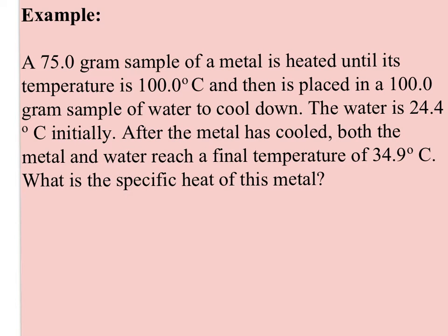What I'd suggest you do when working these problems is write down all your numbers and label them. So the mass of my metal is 75.0 grams. It's heated until its temperature is 100.0°C, so that's the initial temperature, TI. It's placed into a 100 gram sample of water. The water is 24.4°C initially. After the metal is cooled down, they both reach a final temperature of 34.9°.